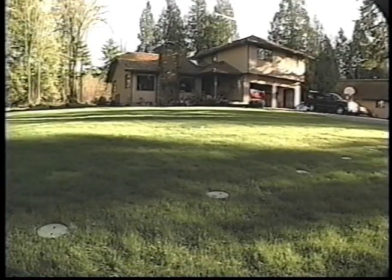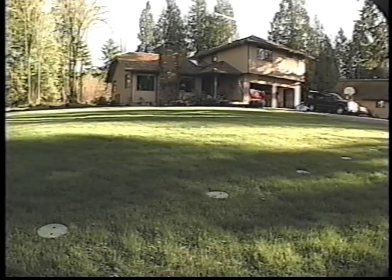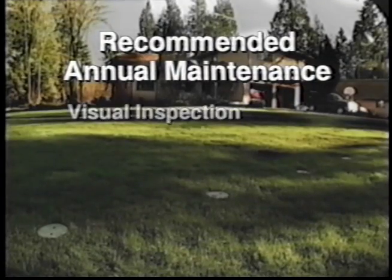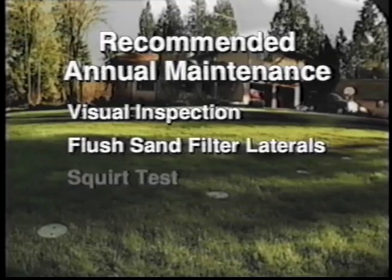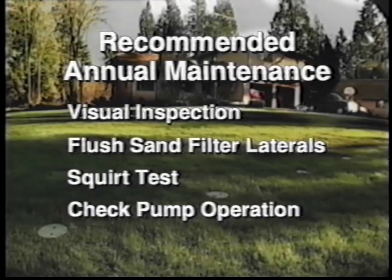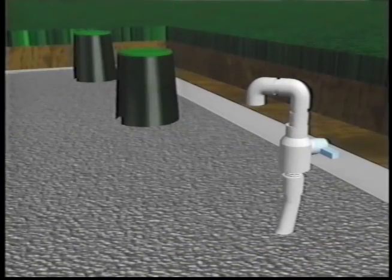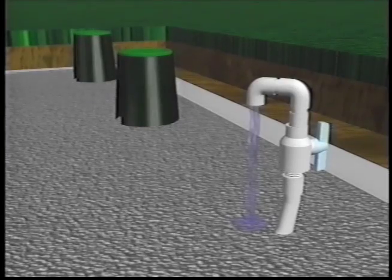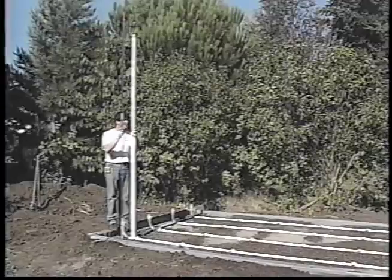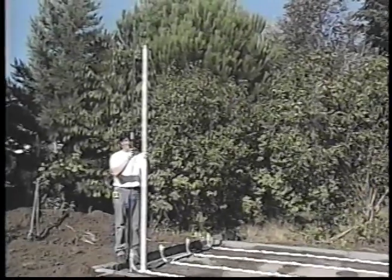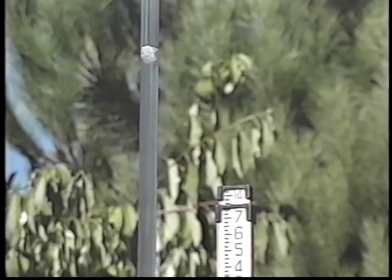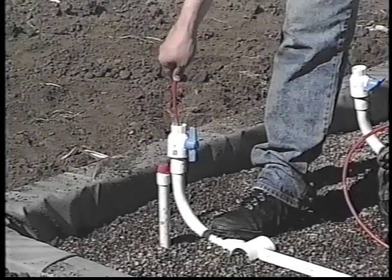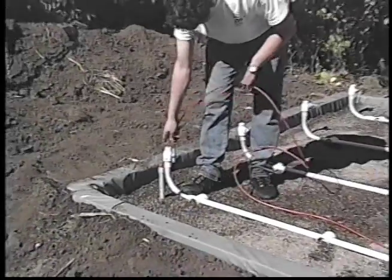The annual maintenance recommended for OSI ISF systems requires only a few tools and normally will take no longer than 30 minutes. Recommended maintenance includes visual inspections, flushing of the sand filter laterals, a squirt test before and after flushing, and verification of proper pump operation. Flushing of the sand filter laterals is performed simply by turning on the pump in the septic tank and then alternately opening and closing the ball valve at the end of each lateral. Using the elbow fittings provided, the effluent is flushed into the clean-out valve box. After lateral flushing, the orifice residual pressure or squirt height is checked using a clear pipe as was done during system installation. If the residual pressure measures higher during the annual inspection than the O&M manual shows during startup, some of the orifices are plugged and lateral cleaning is necessary. Lateral cleaning can be performed with a bottle brush, snake, or a high-pressure jetter hose.